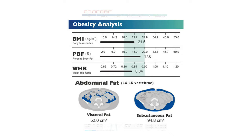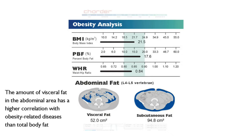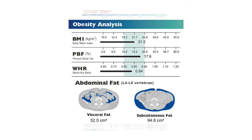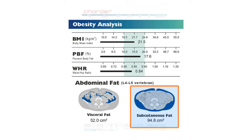The last part of obesity analysis is abdominal fat, which tells you your visceral and subcutaneous fat area. Like percent body fat, it's used to assess risk level based on how much body fat you have. Not all body fat is equal — visceral fat, which surrounds your vital organs in the abdominal area, has a higher correlation with health risks than total body fat. A commonly used risk indicator is 100 cm². If your visceral fat area exceeds this level, it's a sign you need to adjust your diet and activity level, even if your total body fat is within normal range. Subcutaneous fat has less influence on health, so it's more for reference only.